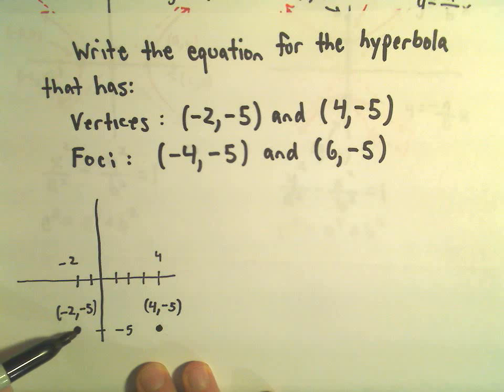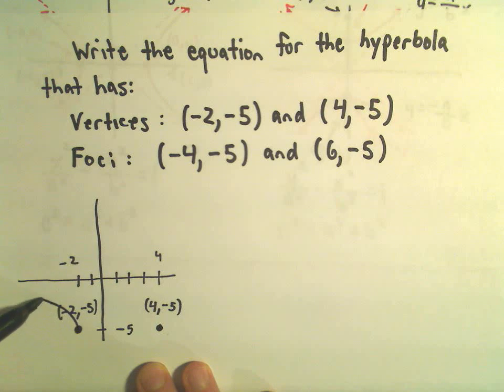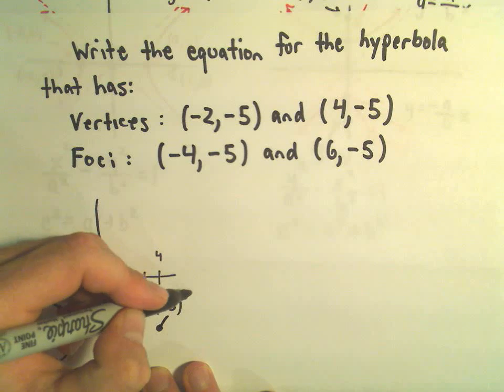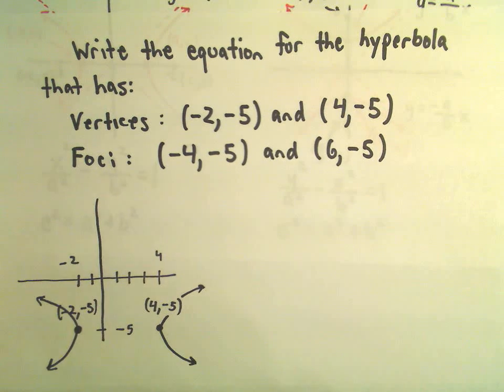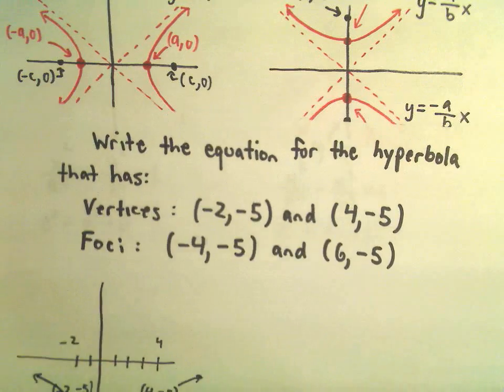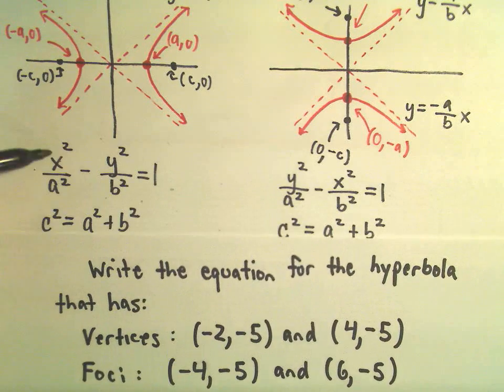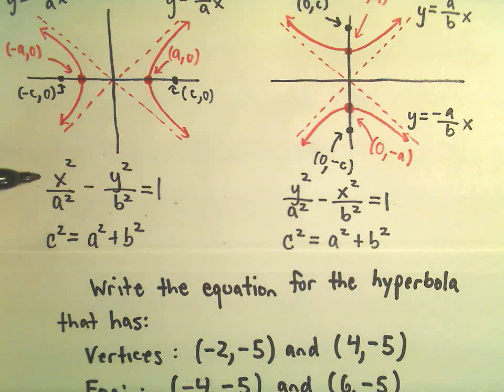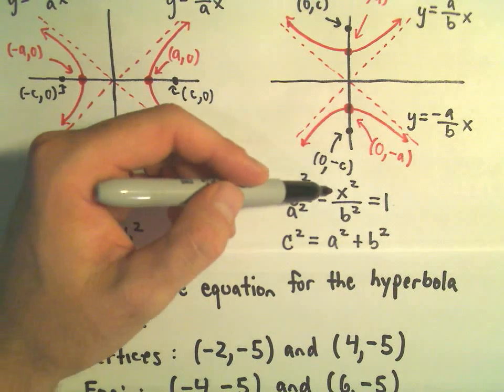At this point, I know that my hyperbola is going to be opening to the left and to the right. Okay, so already, I know I'm going to be filling in, depending on whether it opens to the left or the right, we either use x² minus y² equals 1, or y² minus x² equals 1.